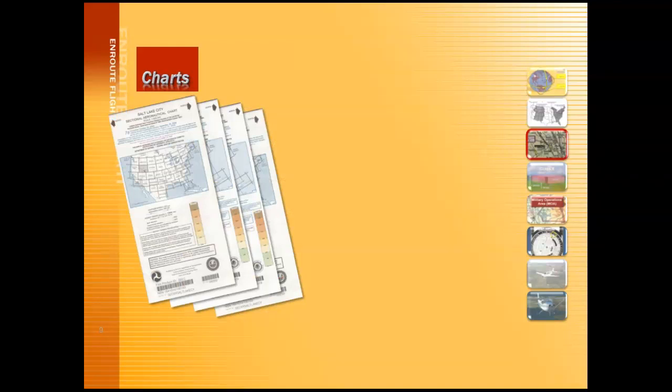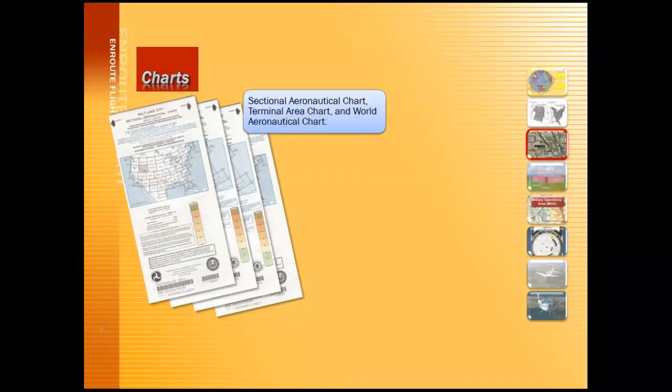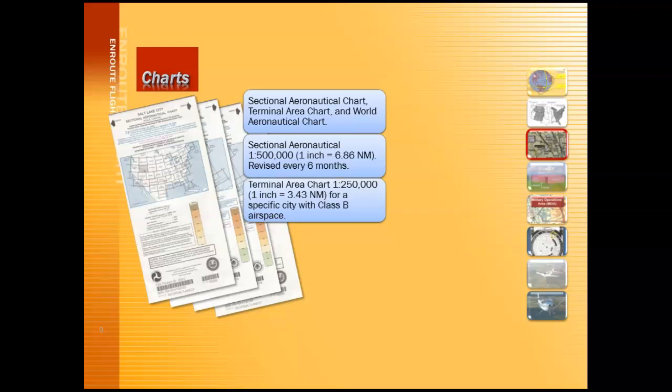There are several different types of charts that we can use to plan our flights: the sectional aeronautical chart, the terminal area chart, and the world aeronautical chart. The sectional chart is the chart we'll be using to plan most of our cross-country flights — it's revised every six months. The terminal area chart is used for specific cities with Class Bravo airspace, providing more detail because it's a larger scale map. The world aeronautical chart is a very large scale map, mostly used for international flight planning.